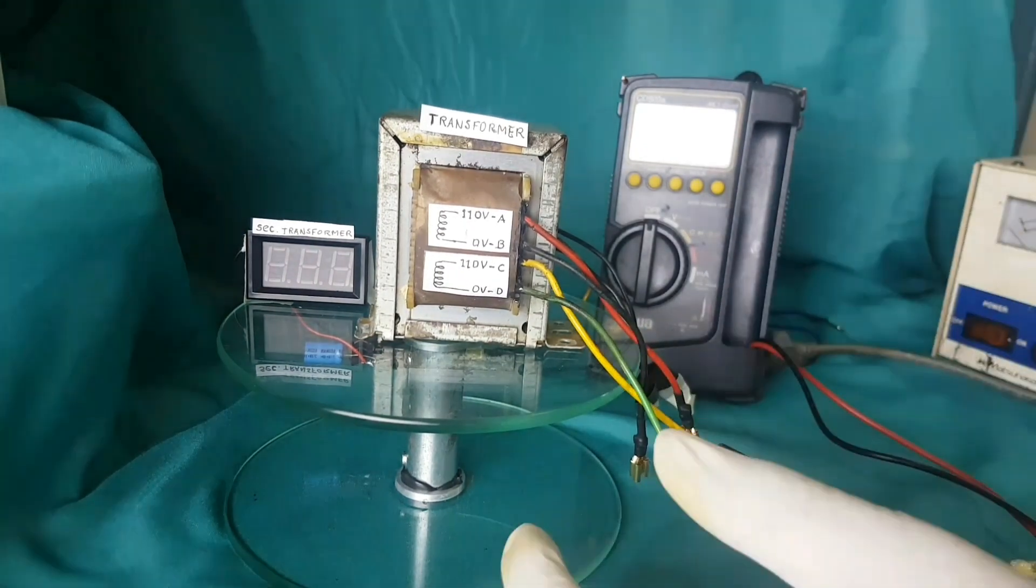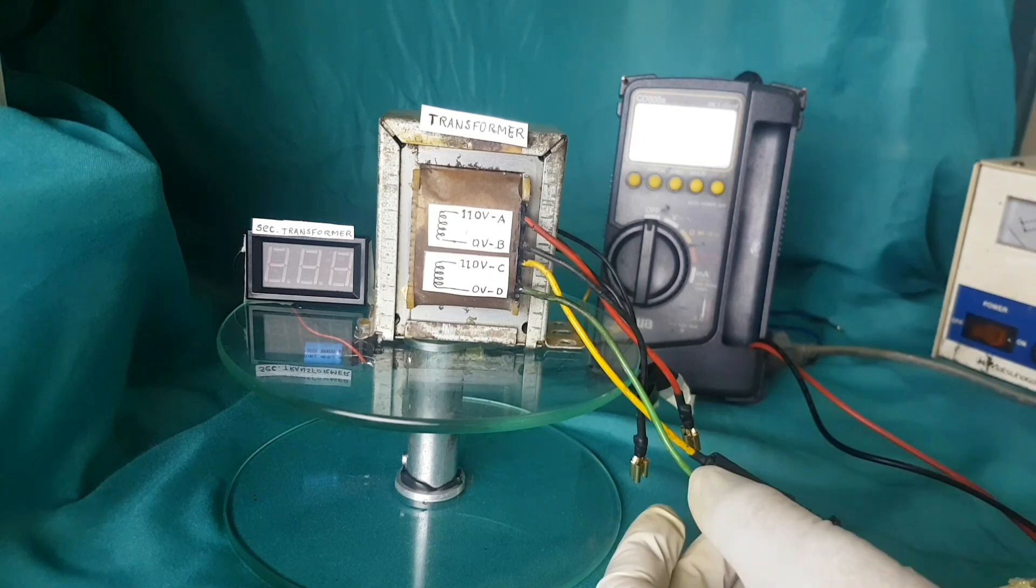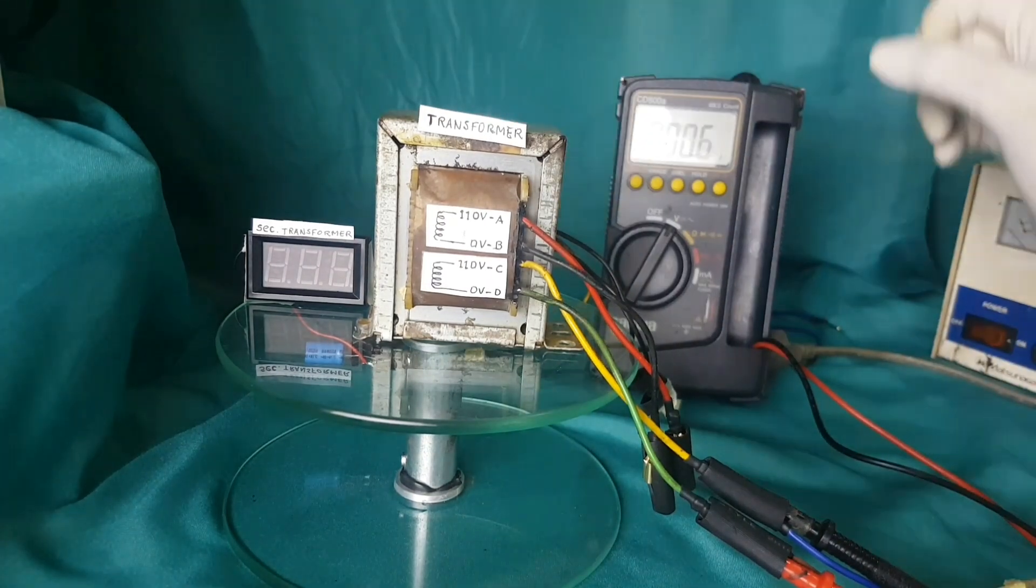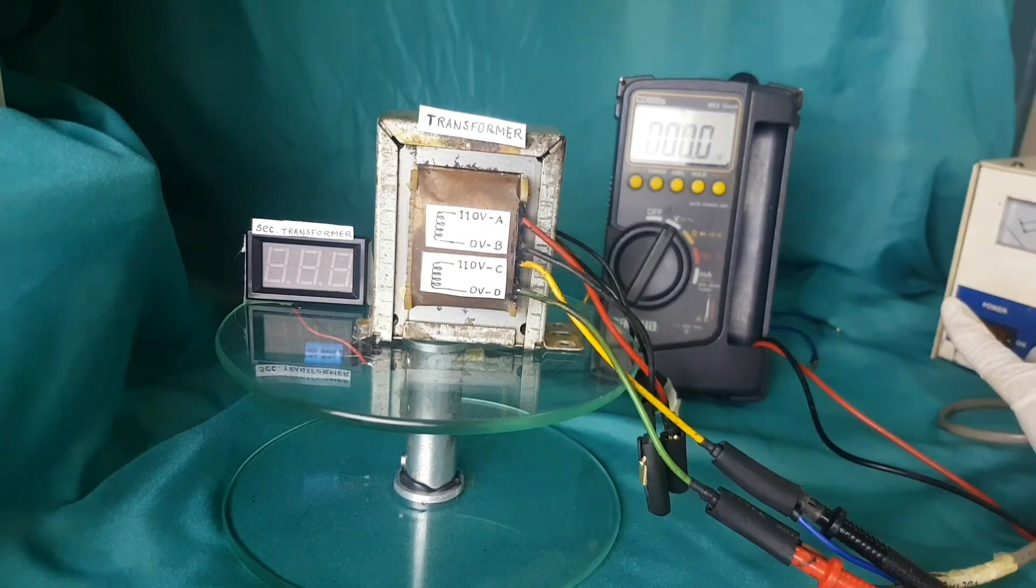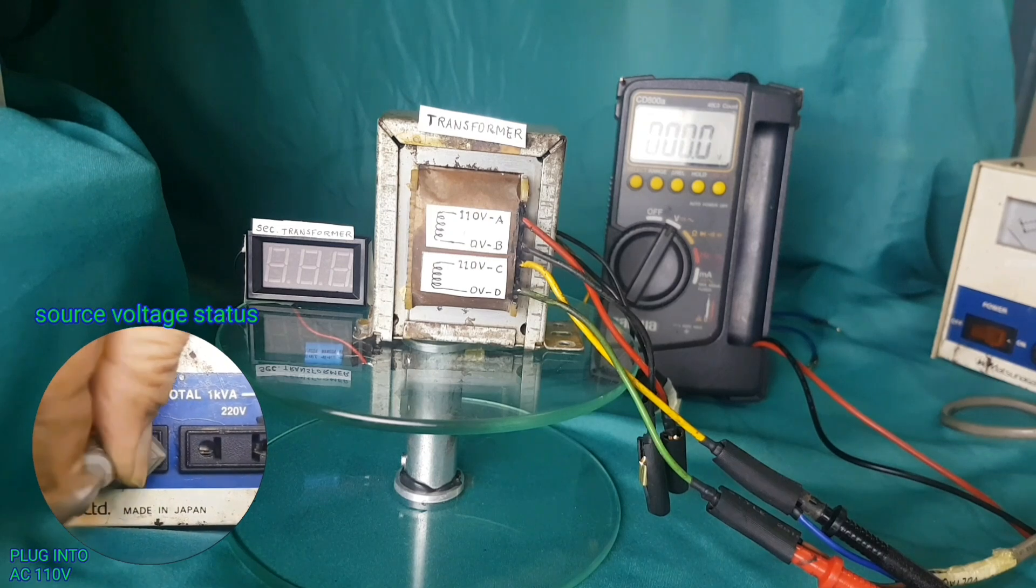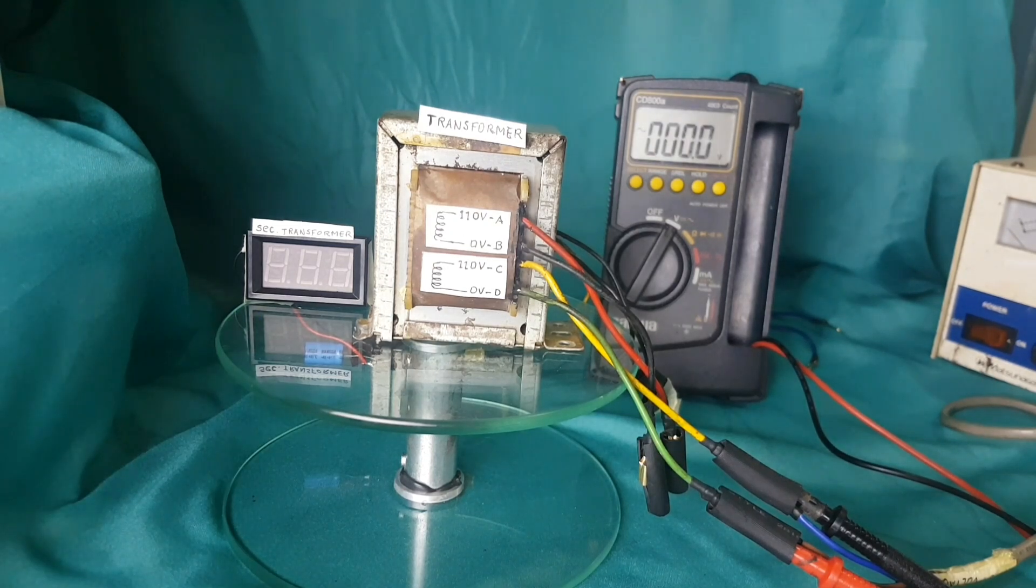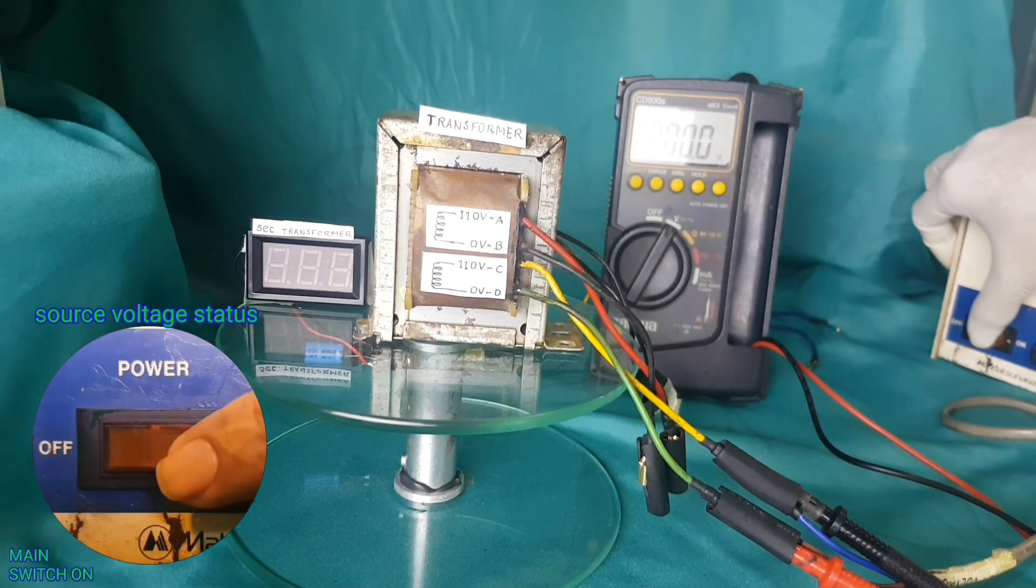Give insulation to prevent short circuit. Turn on the digital AC voltmeter. Insert the plug into the 100V stabilizer socket and turn on the main switch.